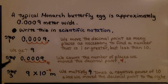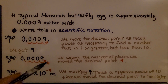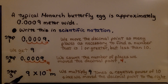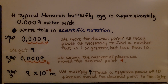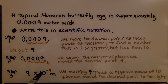Step 2: we count the number of places we moved the decimal point — it was 4. Step 3: we multiply 9 times a negative power of 10, since we moved the decimal point to the right. It was 4 hops, so it's going to be negative 4. To write this in scientific notation, we get 9 times 10 to the negative fourth power meters.